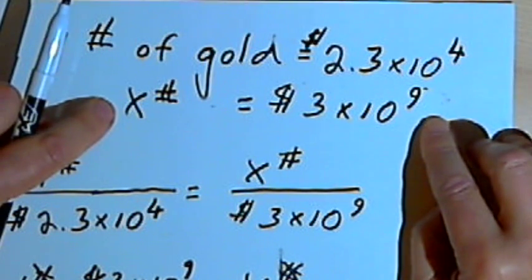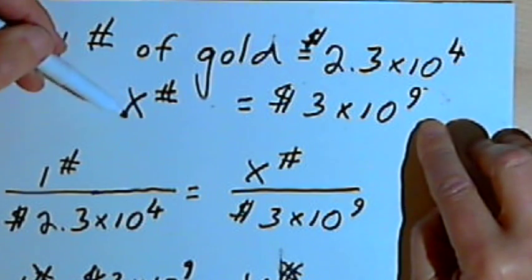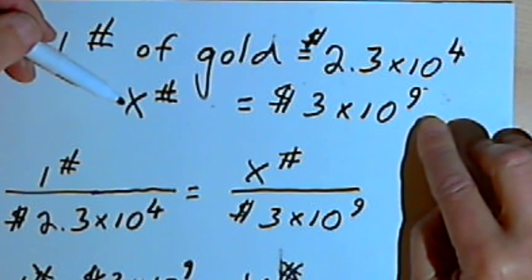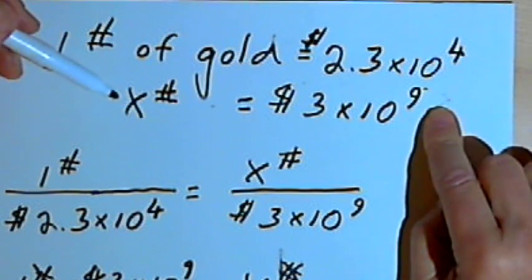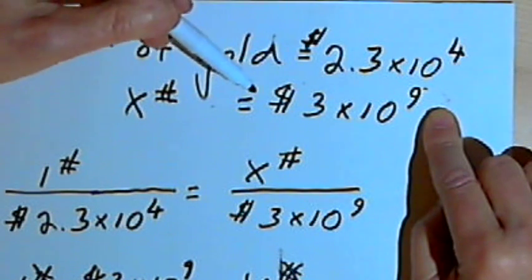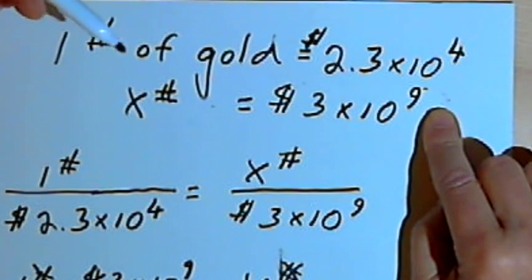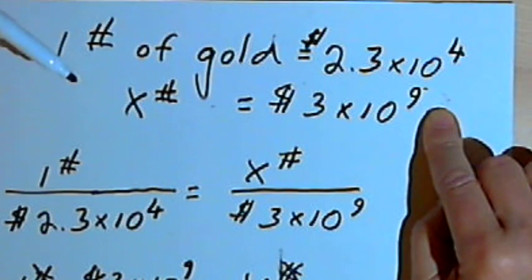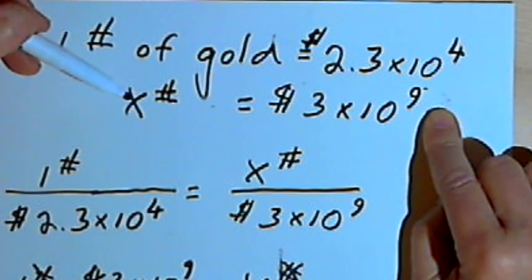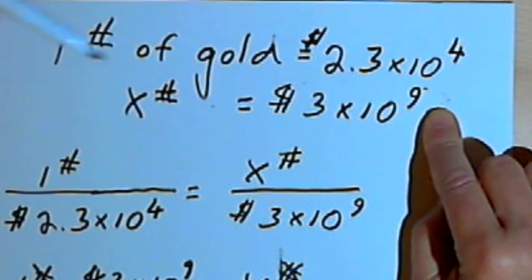My second equation is going to involve an x, the thing I'm looking for, and what I know about it. So what I knew about my problem was that I had 3 billion dollars. So I converted the 3 billion dollars into scientific notation. And I said that x equaled that amount, or x pounds equaled that amount.